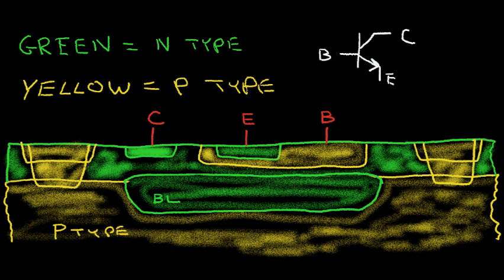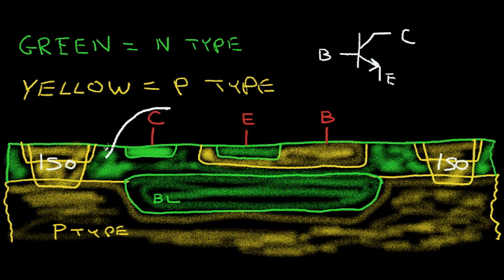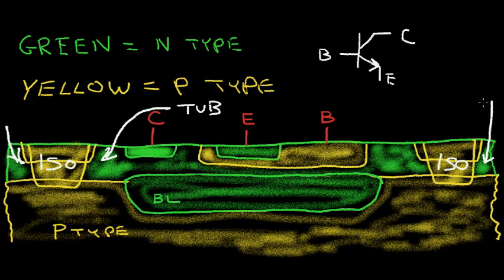This region is an isolation region — I'll call it ISO — and what it does is isolate these tubs. This tub region is where our NPN transistor is constructed. There will be another tub region where perhaps resistors are built, and over on the other side of the isolation there is another tub where, for example, a PNP transistor could be placed. This isolation region allows us to create different devices and have those devices isolated from each other.